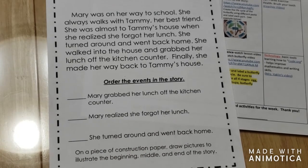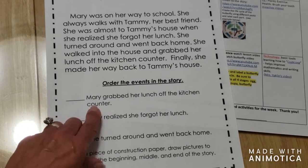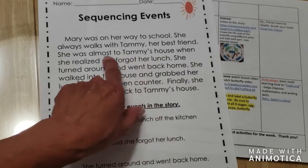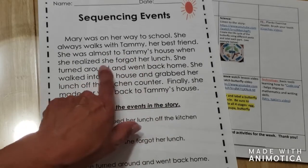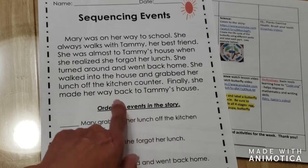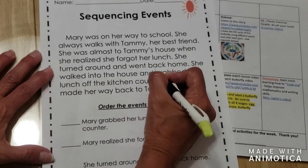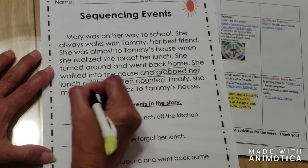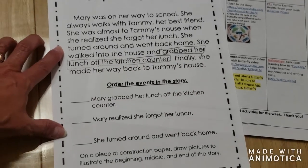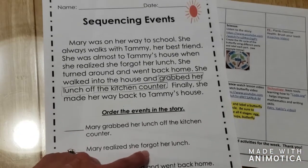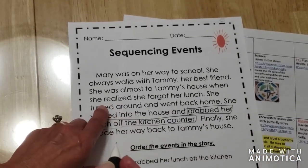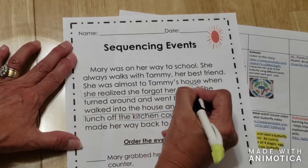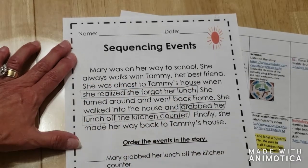This goes back to looking for text evidence and seeing where we can find it. When we see 'Mary grabbed her lunch off the kitchen counter,' I can go back and look to see where she grabbed her lunch off the kitchen counter. So here it is — I'm going to box it: 'grabbed her lunch off the kitchen counter.' Then the next sentence says 'Mary realized she forgot her lunch.' When I go back, I can see right here it says 'she realized she forgot her lunch.' I'm going to box that so you can see where I found my text evidence.